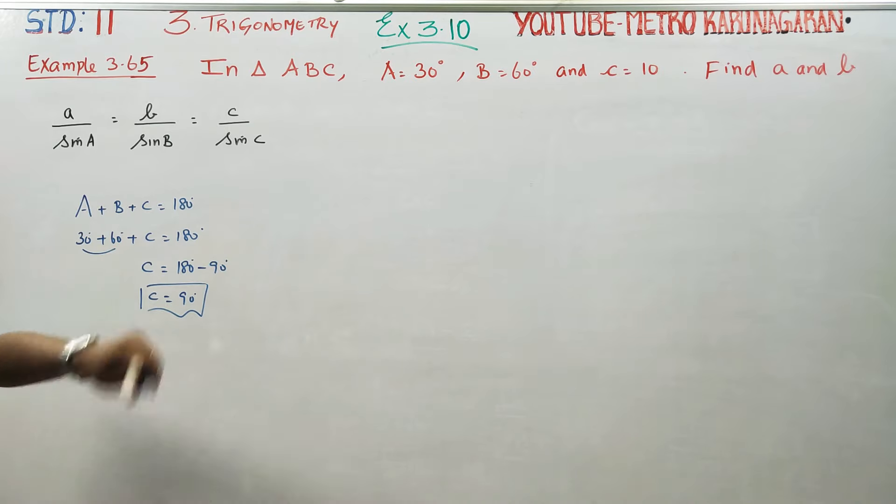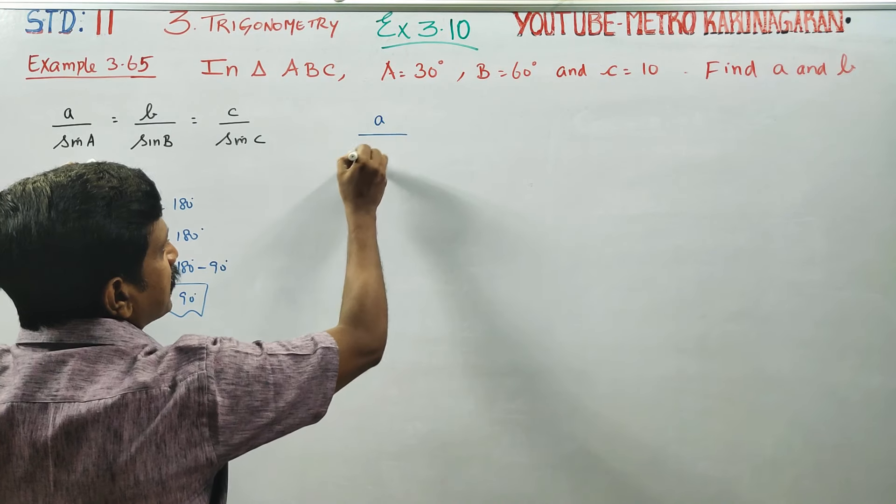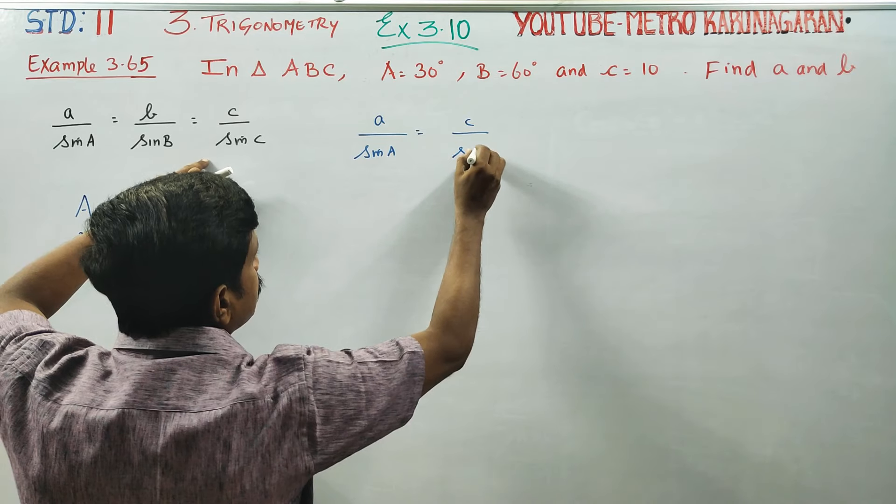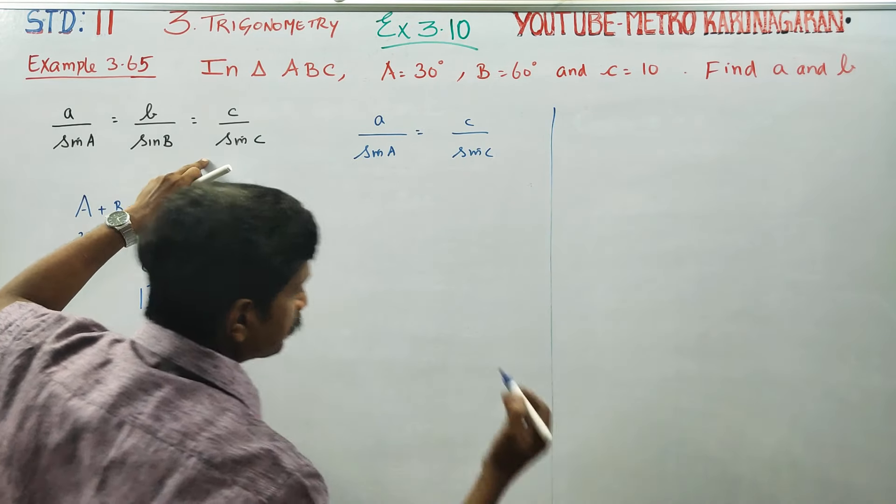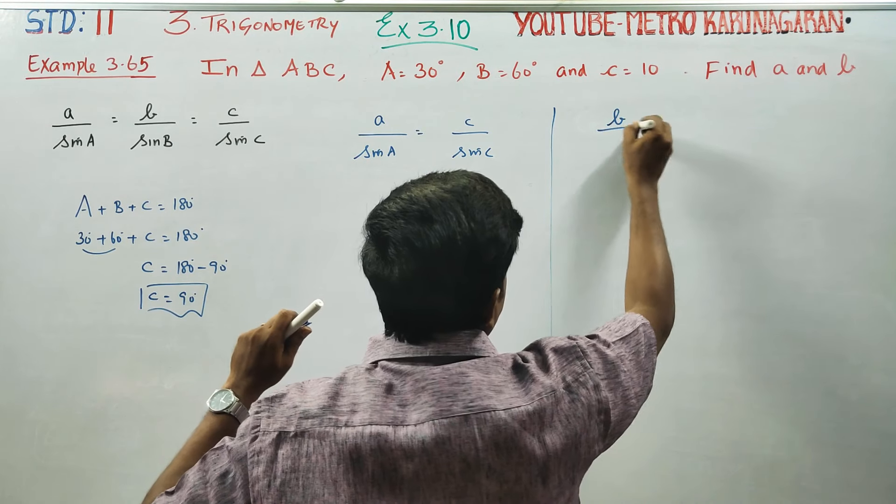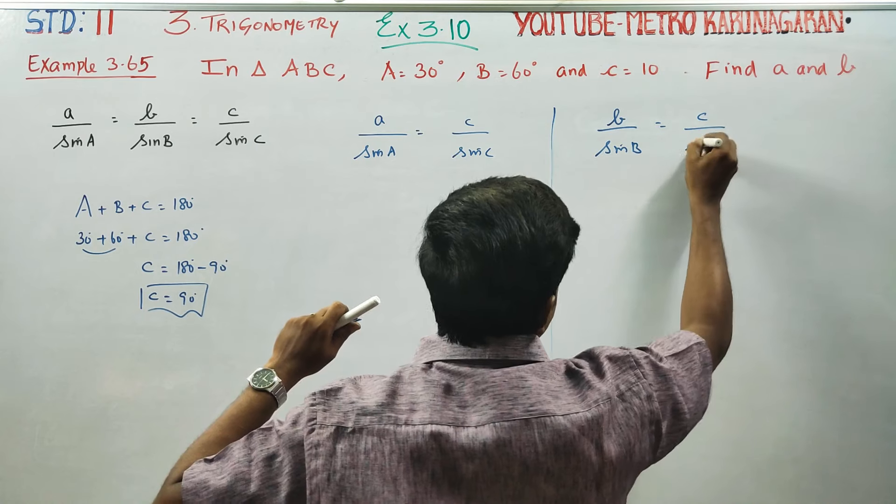Angle A is ready, angle B is ready, angle C is ready. What formula will we use? First, we'll use a/sin A = c/sin C. For B, we'll use b/sin B = c/sin C.